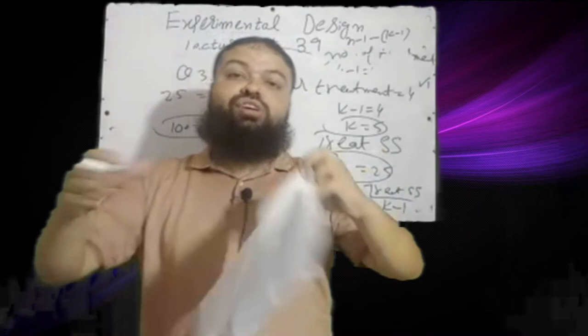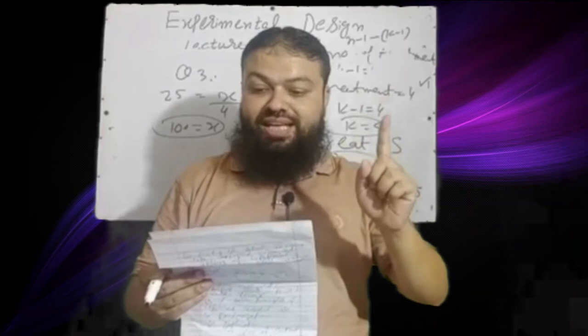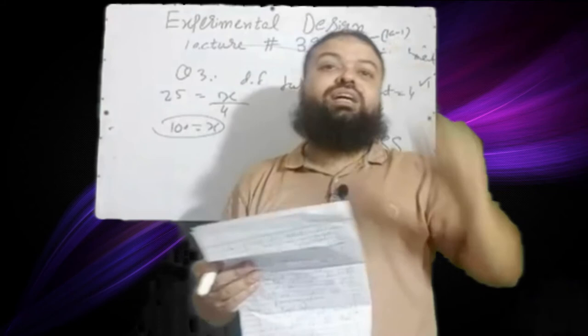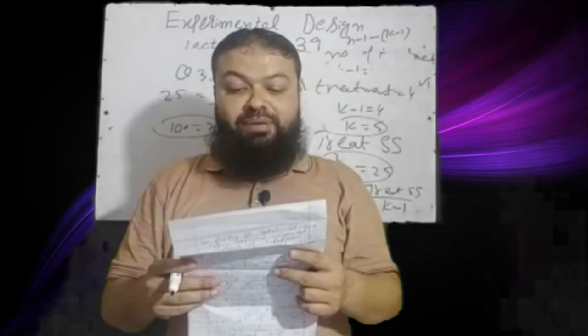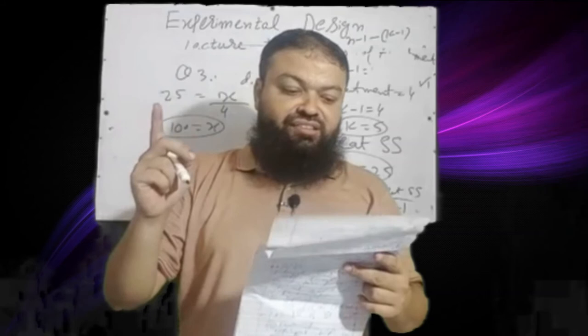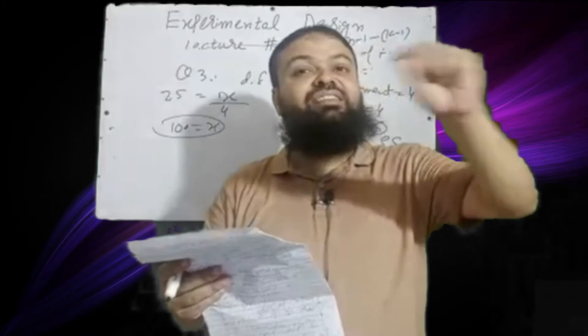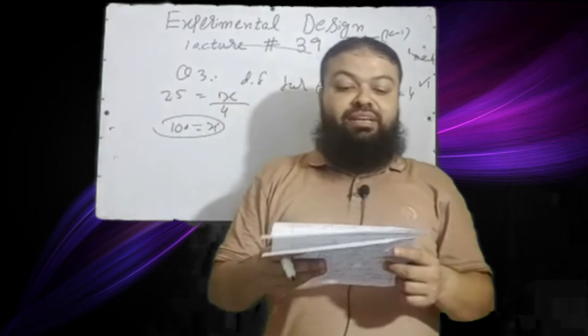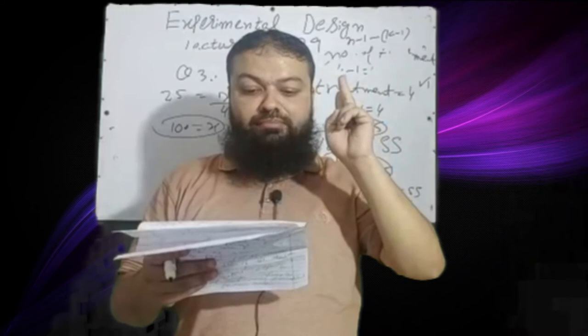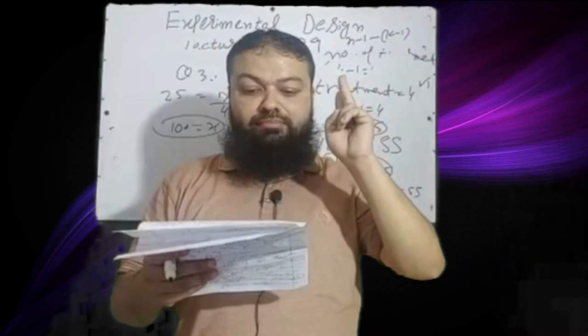Question 4: An experimental design is — A: a map (incorrect), B: an architect (incorrect), C: a plan of experiment. C is the correct option. Question 5: In experimental research, the experimental unit is — A: an animal, B: a plot of land, C: a group of animals, D: all of these. D is correct, as all can be experimental units. Question 6: A long-term experiment is conducted in — A: one season, B: more than one season, C: more than one year, D: both B and C. D is the correct option.